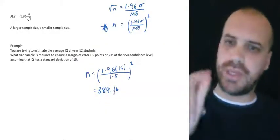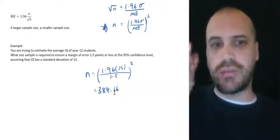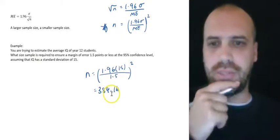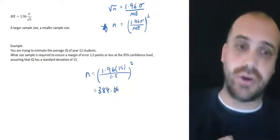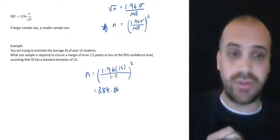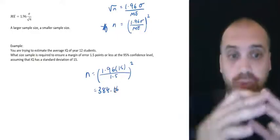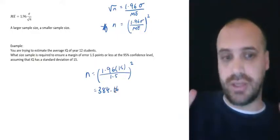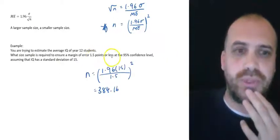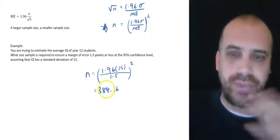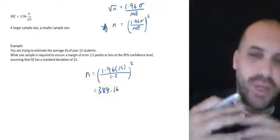Now you need to be super careful here. This is one of those instances where you must round up. Because if you round down here and only sample 384 students, then your margin of error is going to be larger than you want it to be. So you've always got to round up if you want a margin of error of 1.5 points or less. If you round down, your margin of error is going to be like 1.52 or 1.53.